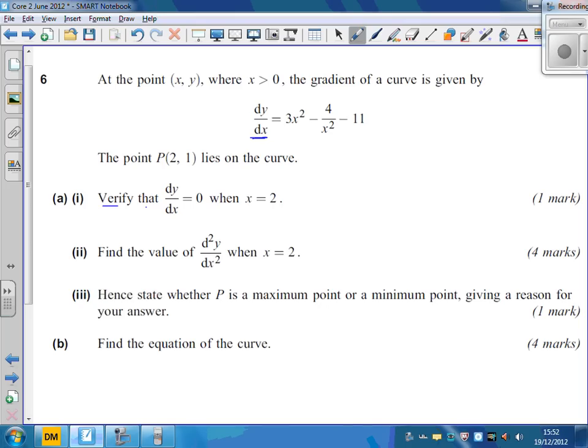It just says verify that dy/dx equals 0 when x is 2. Let's just stick the 2 into the formula: 3 times 2 squared minus 4 over 2 squared minus 11. 2 squared is 4, 3 times 4 is 12, 4 divided by 4 is 1, take away 11 equals 0. Therefore, dy/dx equals 0. Just one mark for that.